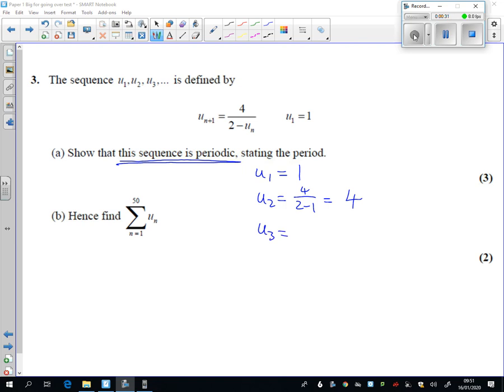Let's try the third term. So the third term is 4 over 2 take away 4, so I've got 2 over minus 2, sorry, 4 over minus 2, which is minus 2.